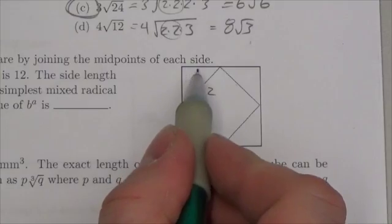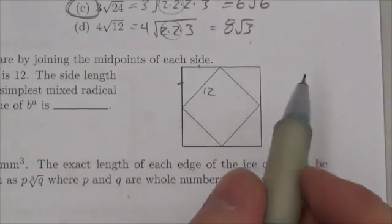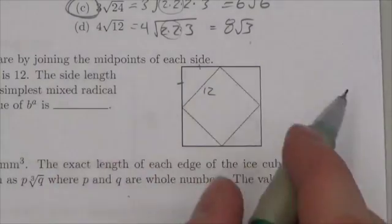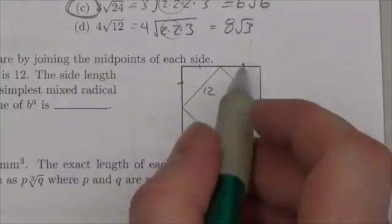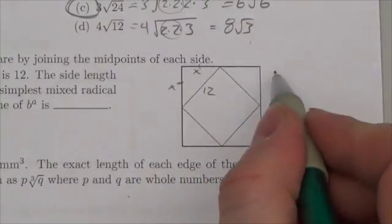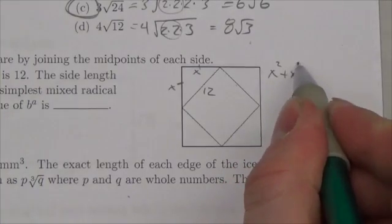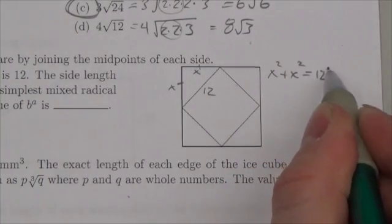Well if this is 12, now we're going to assume these are the same. We assume they're the same. We're told that you join the midpoints here. So if we call this piece x, this piece x here, we know that x squared plus x squared has to equal 12 squared.